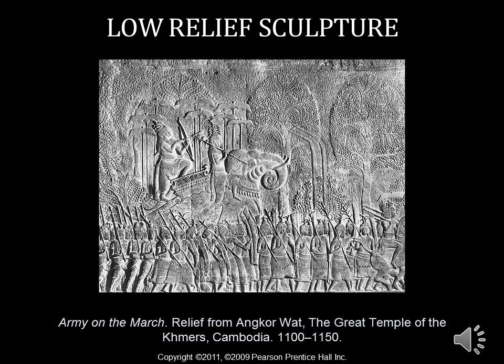Here is another example of a low relief sculpture — it's Army on the March, a relief from the Angkor Wat Temple in Cambodia, roughly from about 1,000 years later than the Greek coin we looked at. You can look at low relief sculpture as a more illustrative way of sculpting.